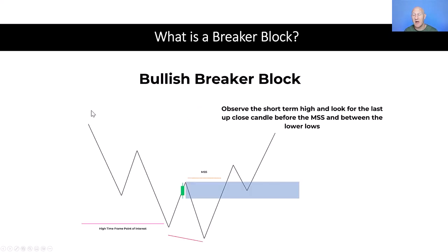Moving across to our bullish breaker block, it's pretty much just the opposite of our bearish setup. So we have our high time frame point of interest and the market is trending down towards that. We get an initial sweep of that high time frame point of interest, and the market pulls back before then dropping lower.